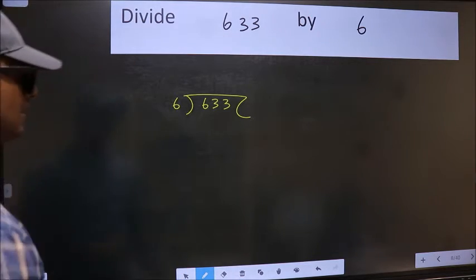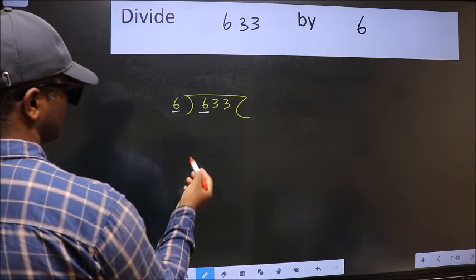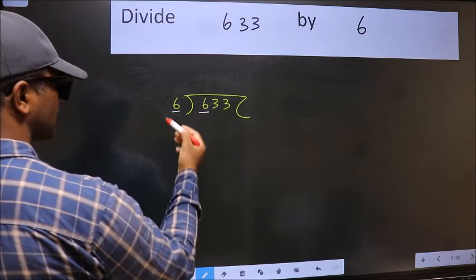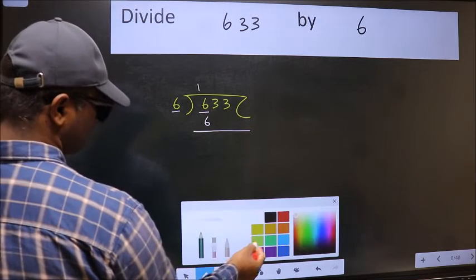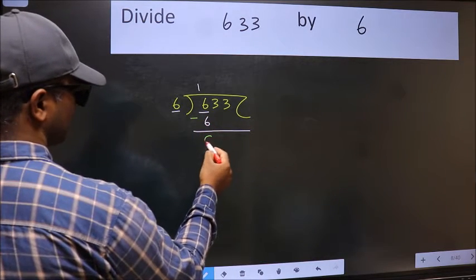Next. Here we have 6 and 6 here. When do we get 6 in the 6 table? 6 once, 6. Now we should subtract. We get 0.